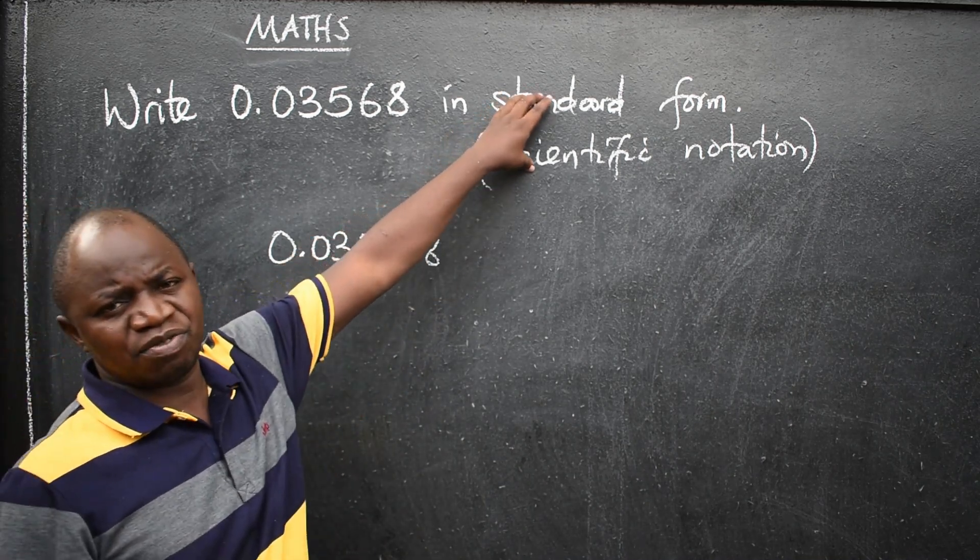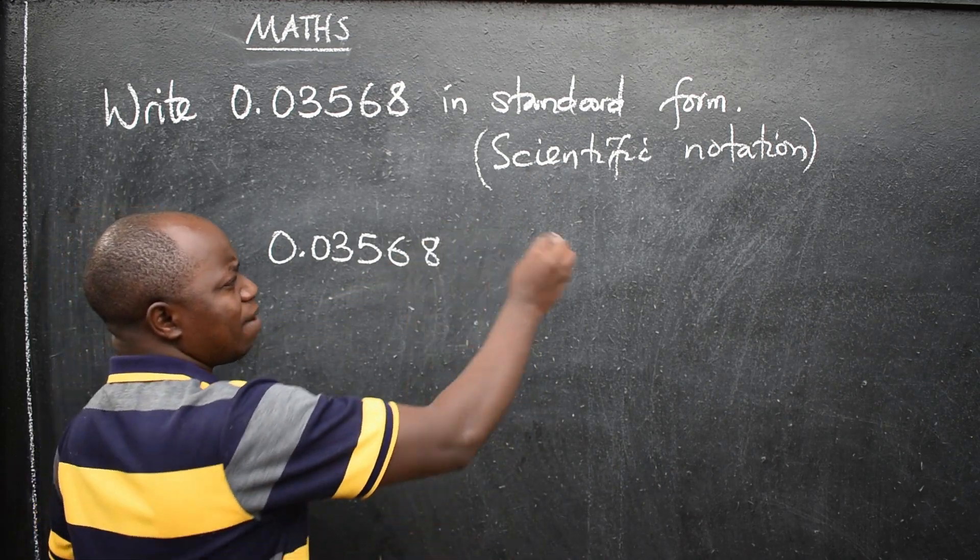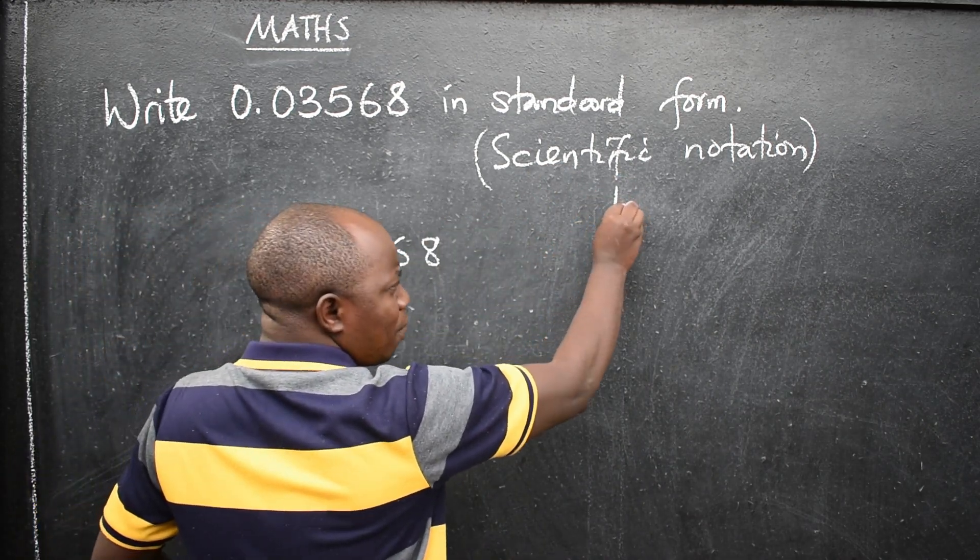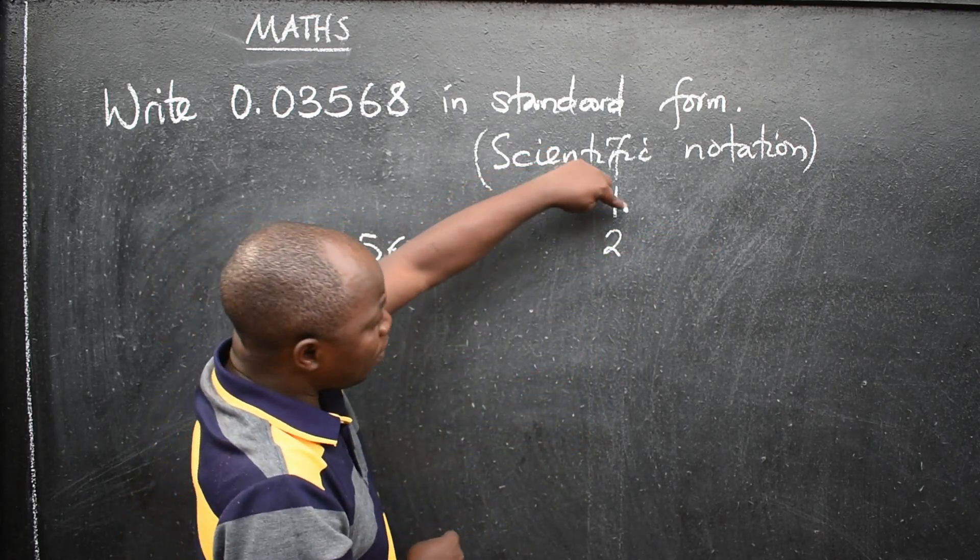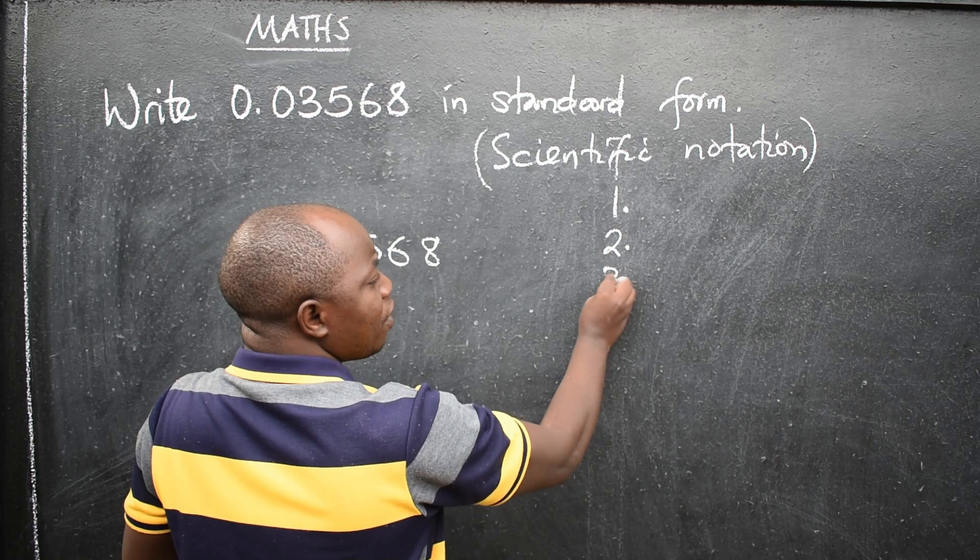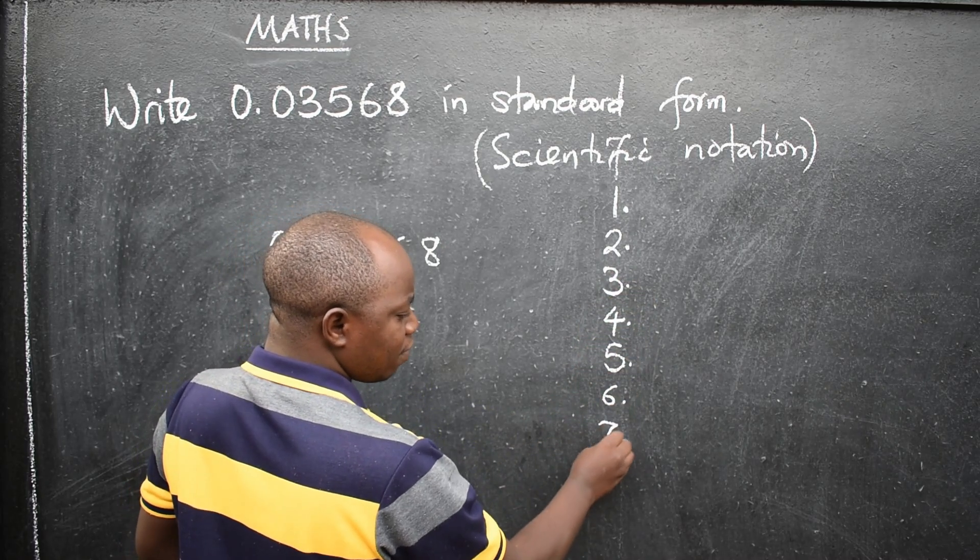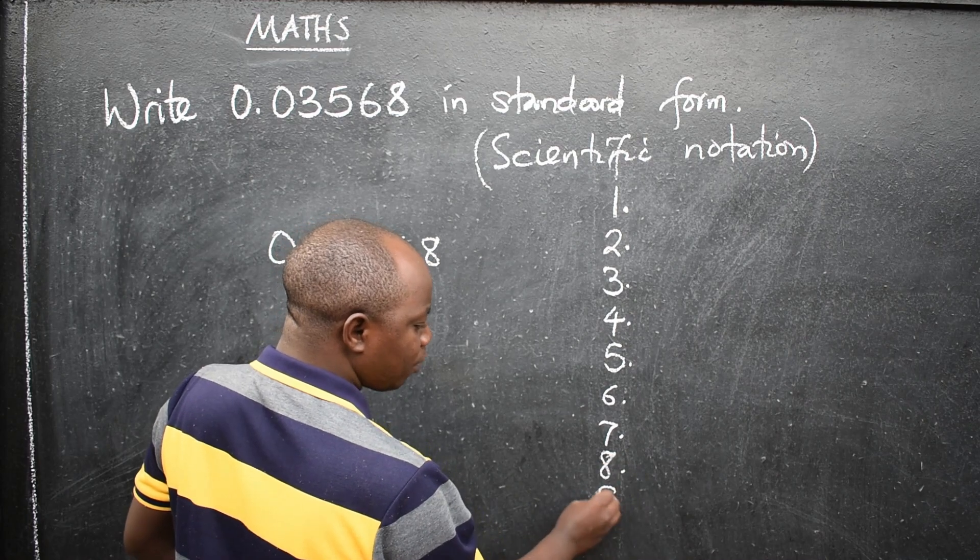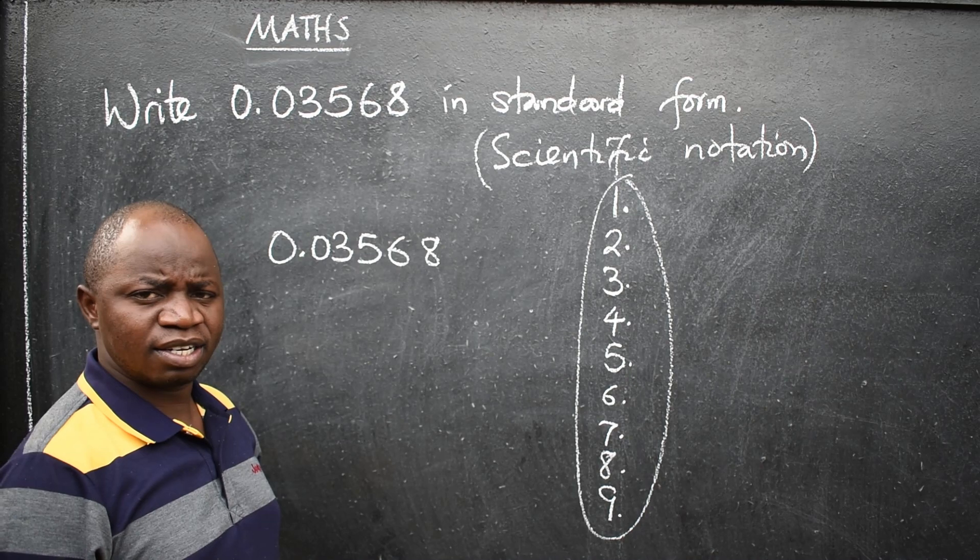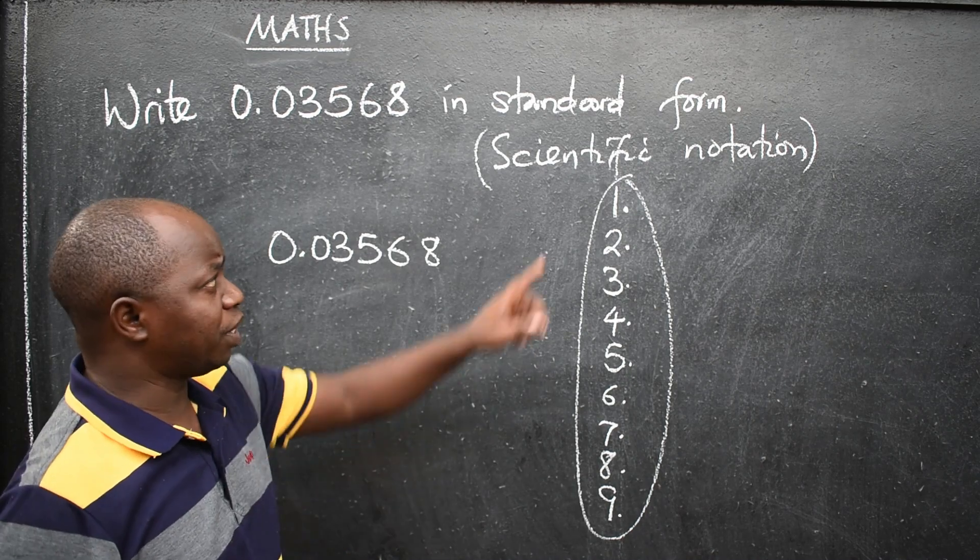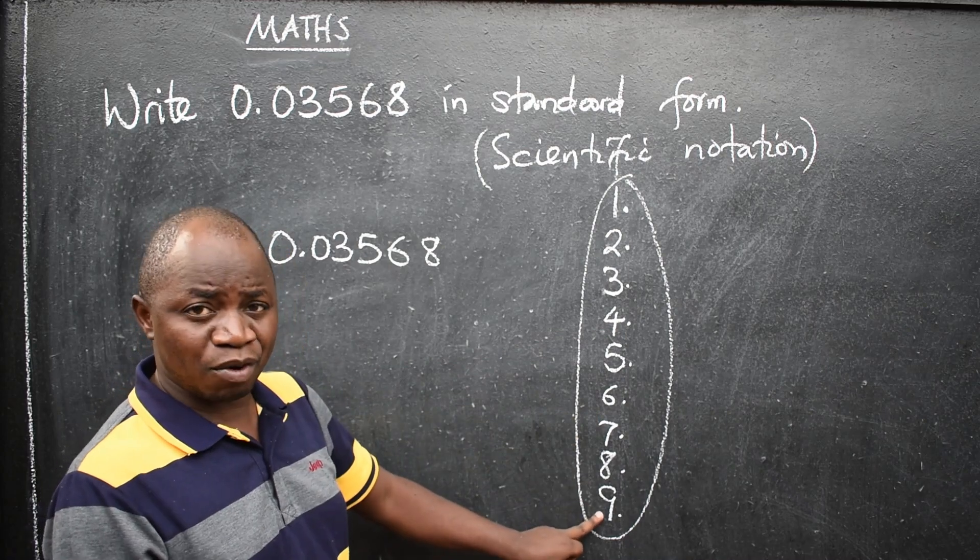When you're writing in standard form or scientific notation, always know that the number should be 1 point something. It should be 1 point, 2 point, 3 point, 4 point, 5 point, 6 point, 7 point, 8 point, up to 9 point. It should end here. Take note of that. Whenever you're writing in standard form, it should always be 1 point through 9 point.